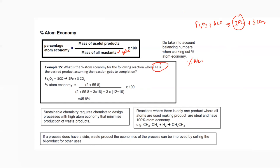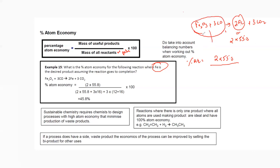The mass of the desired product: there are two moles of iron in the equation, and one mole of iron is 55.8, so two moles gives 2 × 55.8. Divide by the total mass of all reactants or products — it's the same either way.